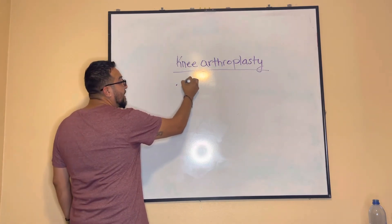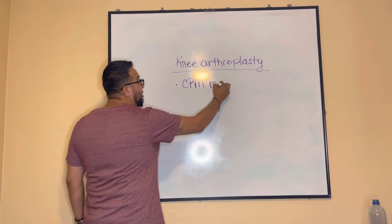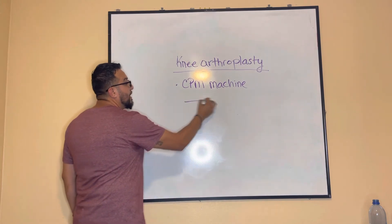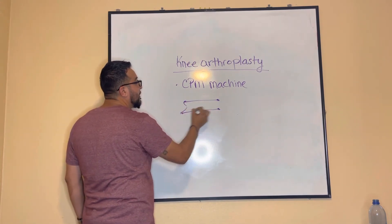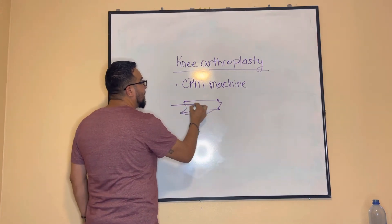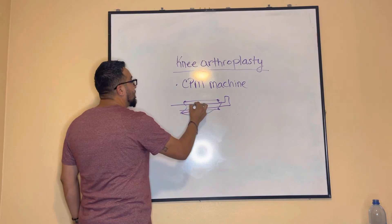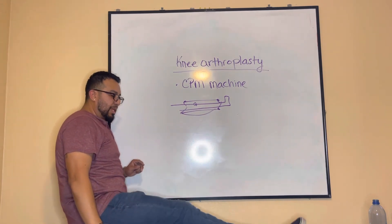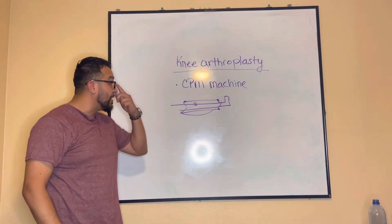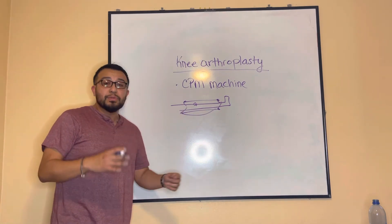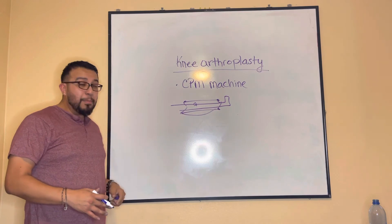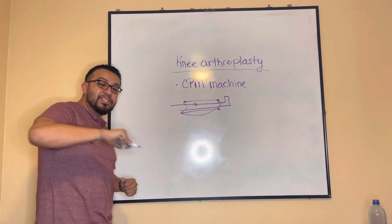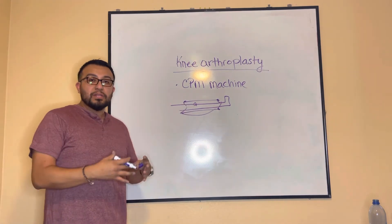What you have to consider is the CPM machine — continuous passive motion machine. It has a little device with a sling, and the patient's leg is placed on it. This machine will passively flex and extend the knee. The patient is placed on it as soon as they're stabilized coming out of the operating room. We must promote this articulation — extension and flexion of that joint — to prevent any contractures to that area.